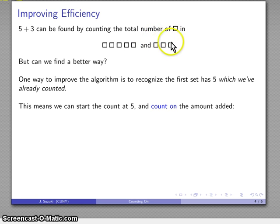6, 7, 8. That gives me again the same sum: 5 plus 3 is equal to 8, but using a different strategy—count on.